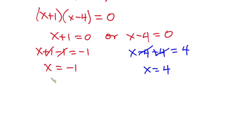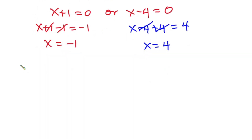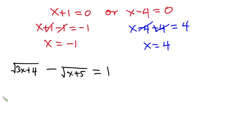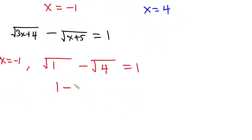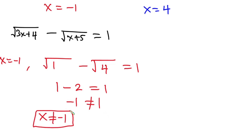These are our candidate values. Let's test which ones satisfy the original equation: square root of 3x plus 4 minus square root of x plus 5 equals 1. When x equals negative 1: square root of (3 times negative 1 plus 4) equals square root of 1, and square root of (negative 1 plus 5) equals square root of 4 equals 2. So we get 1 minus 2 equals negative 1, which is not equal to 1. Therefore x equals negative 1 is not a solution.